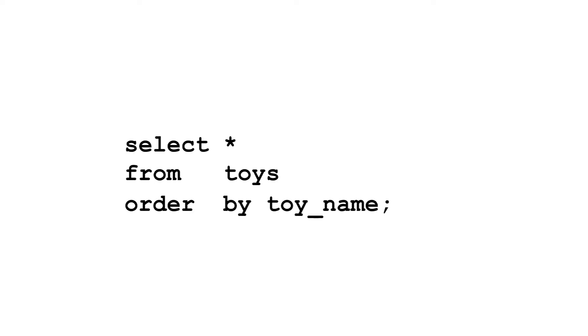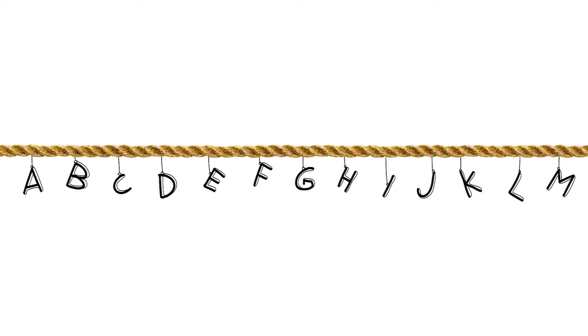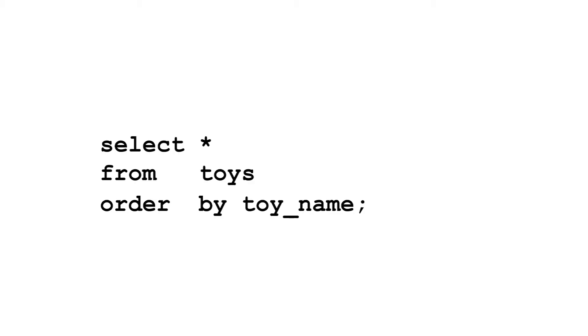The ORDER BY goes at the end of your query, listing out the columns you want to sort by. It then orders your results from smallest to largest for numbers, oldest to newest for dates, or alphabetically for strings. If you want to sort the opposite way, from largest to smallest and so on, add the DESCENDING keyword after the column.